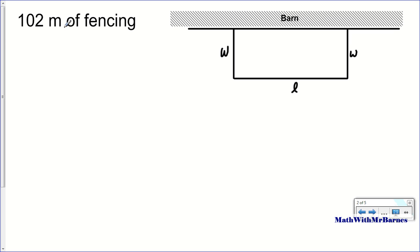So here's my widths, and here's my length. So I only have, I label every single width and every single length that I possibly can. Now remember that this is not a side of the rectangle, because there's a barn here, so we don't have to worry about this length across.